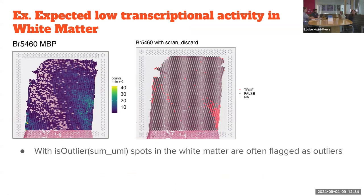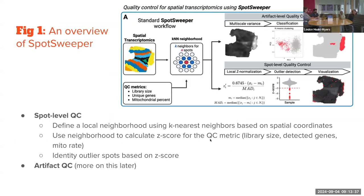An obvious pattern we see repeatedly, also noted in this preprint, is that white matter in brain tissue has much lower transcriptional activity than gray matter. Here I've plotted a Visium slide from the LIBD where MBP — a white matter marker — lights up showing white matter. But if we look at which spots scran's isOutlier would discard due to low sum UMIs, those low-library spots overlap with where we think the white matter is. We don't want to drop these spots — they're worthwhile and we want to learn more about them.